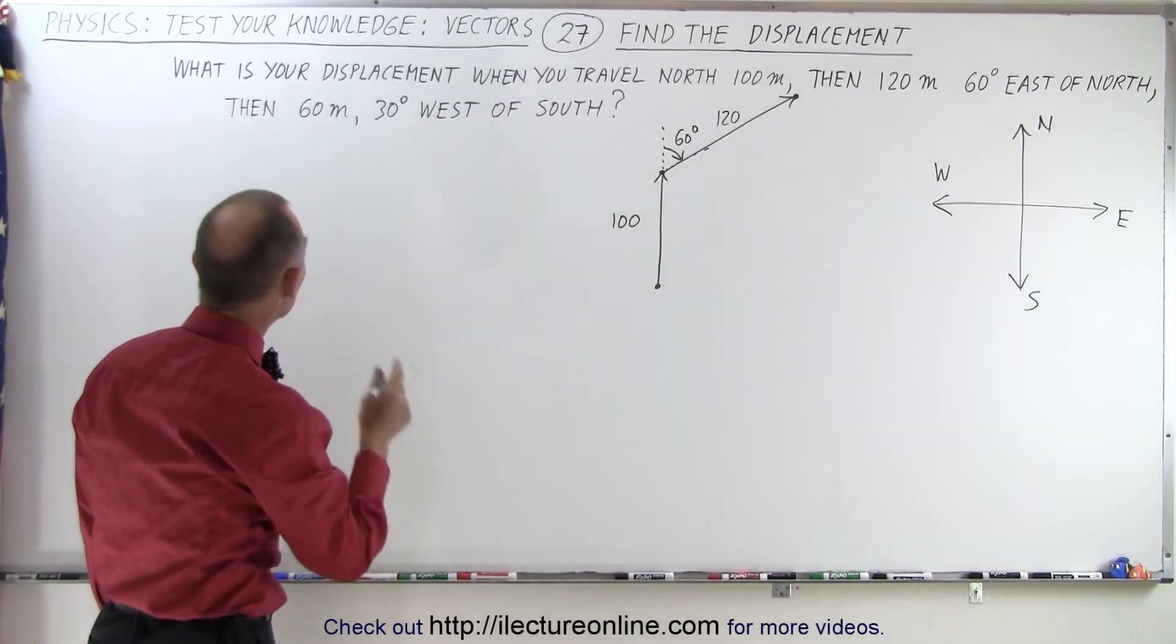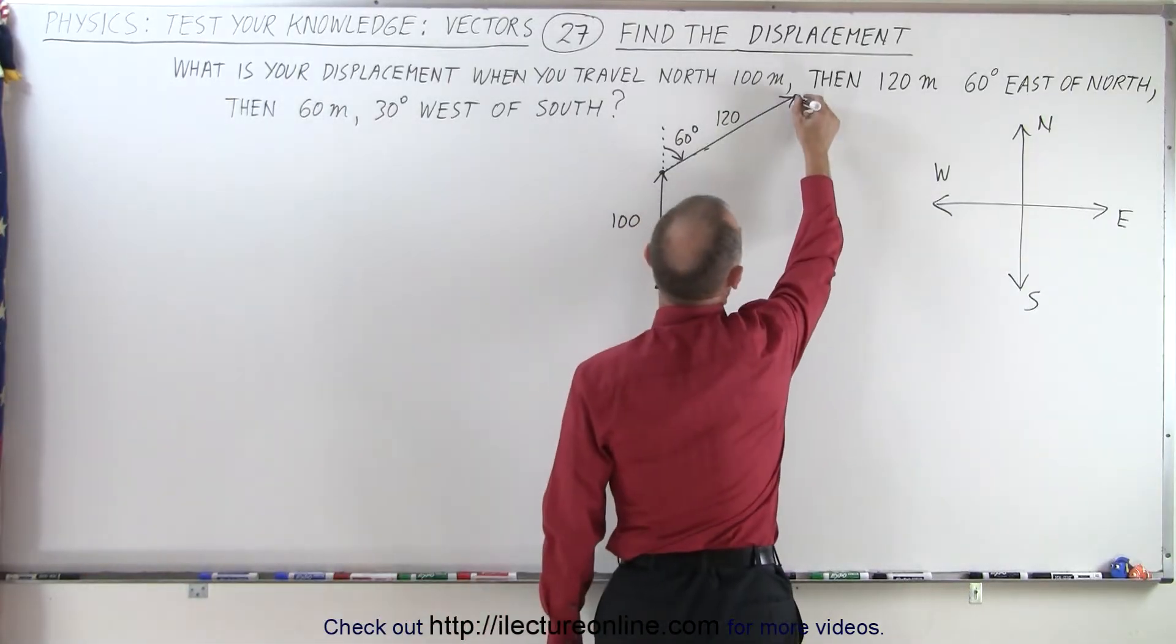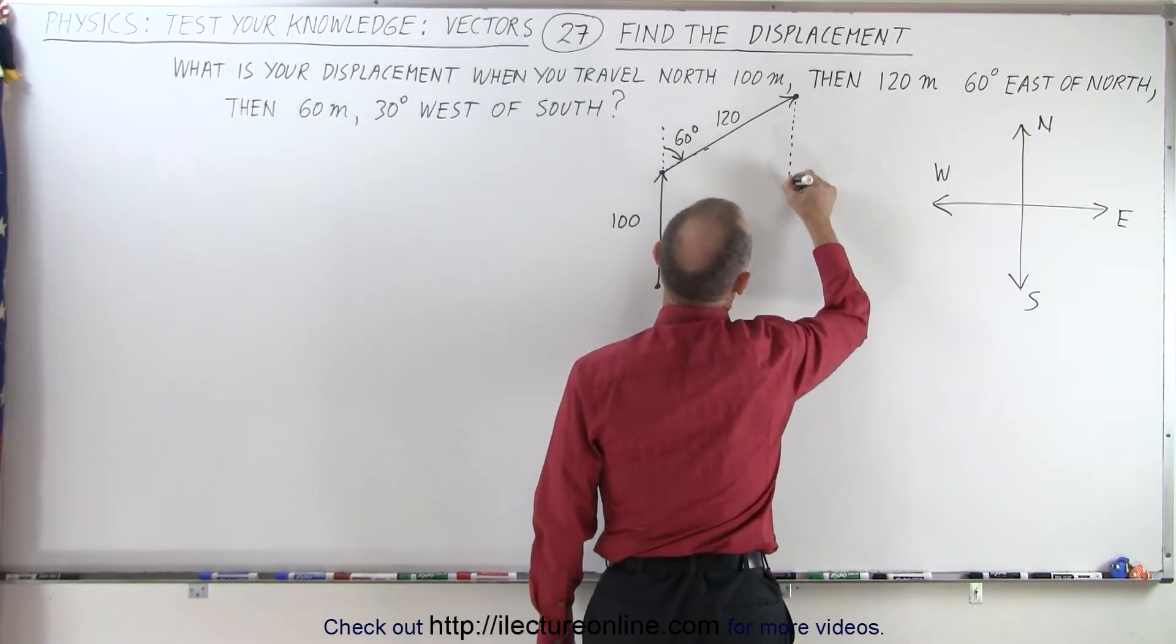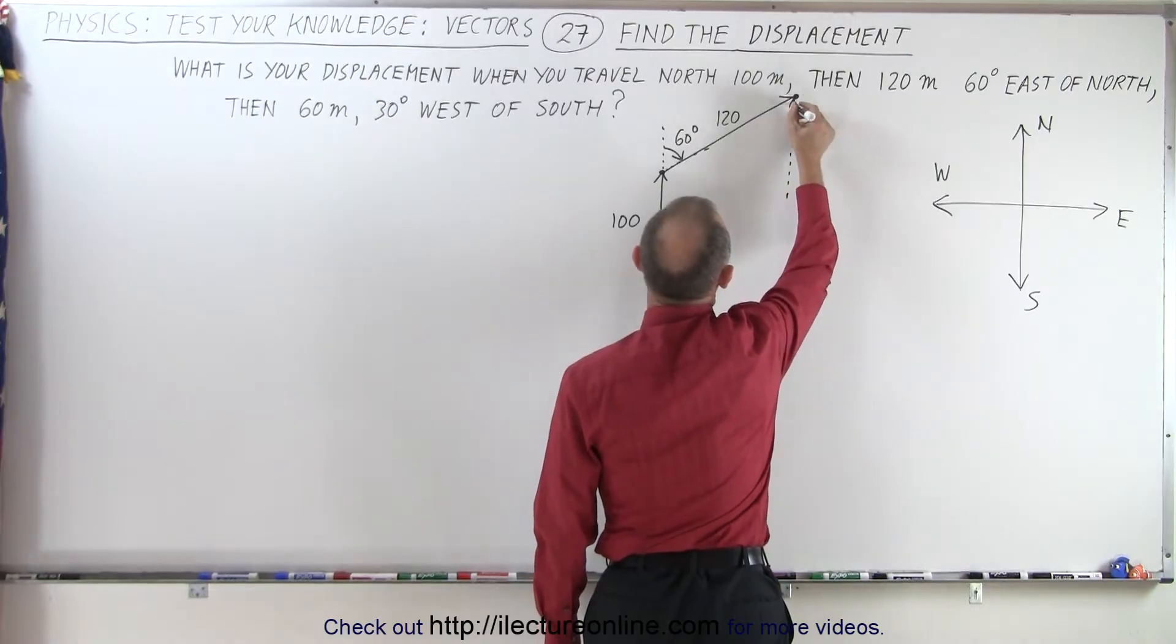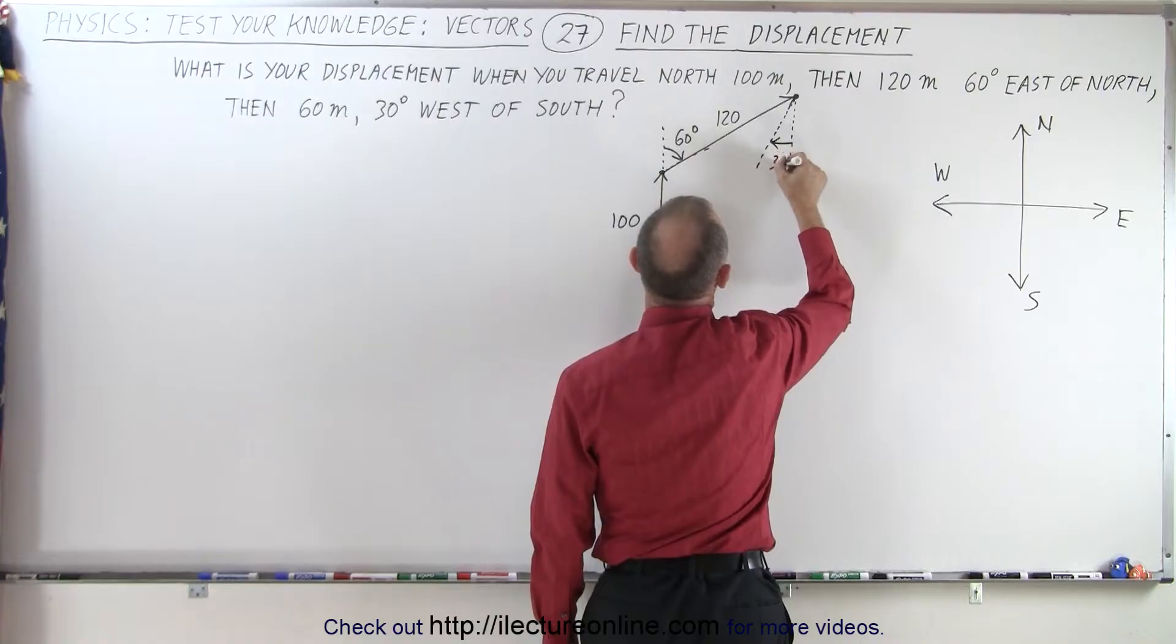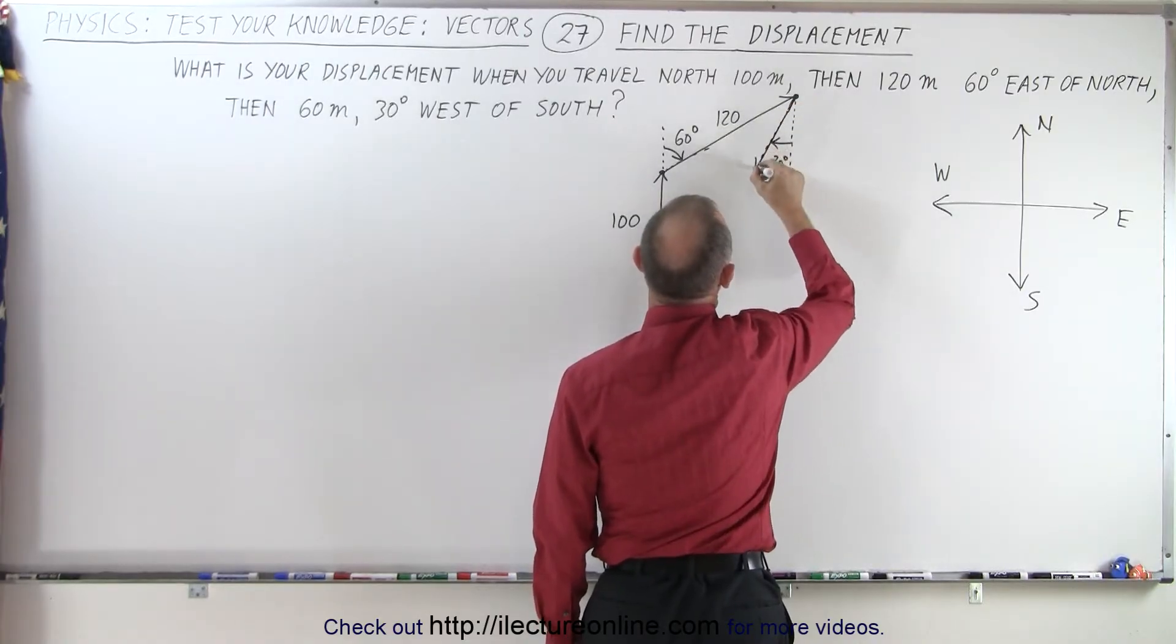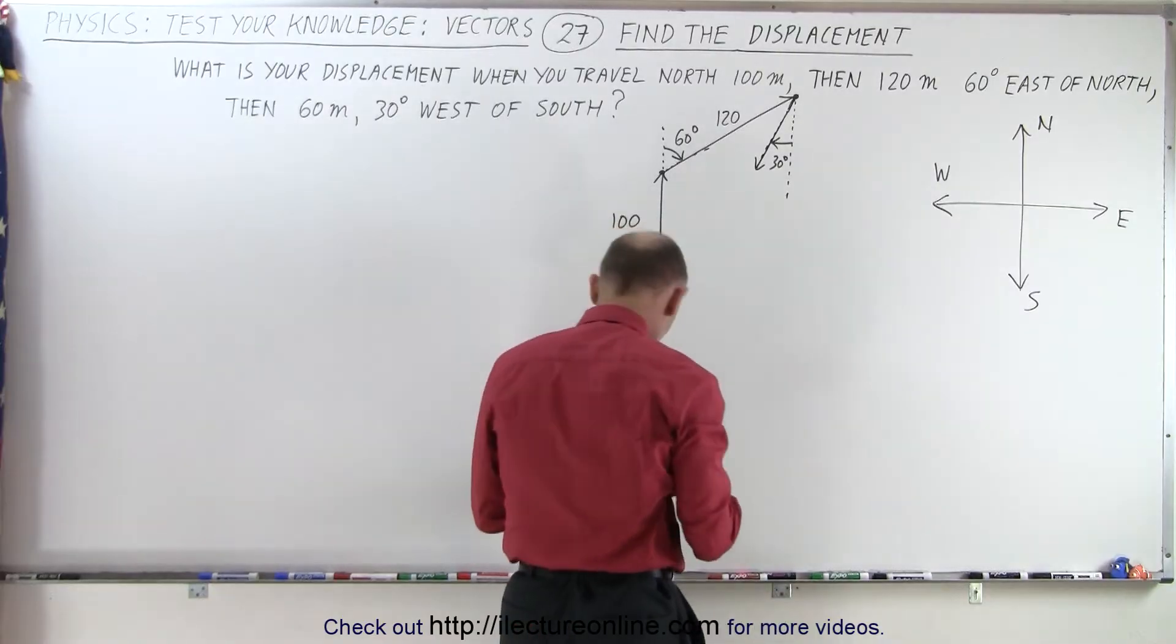And then finally another 60 meters, 30 degrees west of south. If we were to go straight south, it would be like this, and west of south, 30 degrees would be in this direction. This is an angle of 30 degrees, and we travel a distance of 60 meters. There we go, and there's your finishing point.